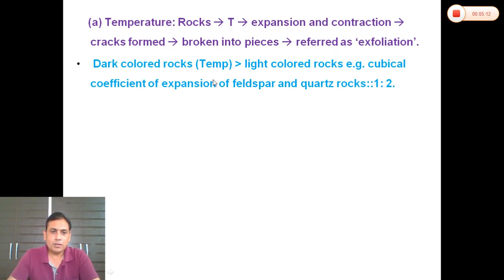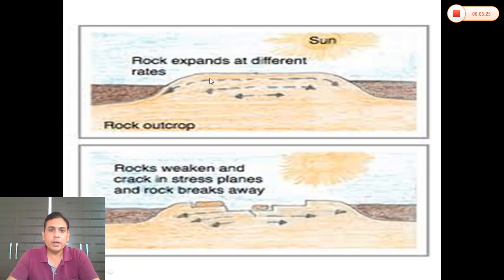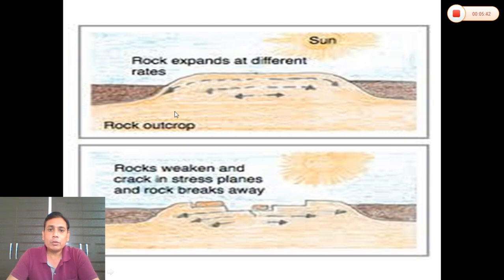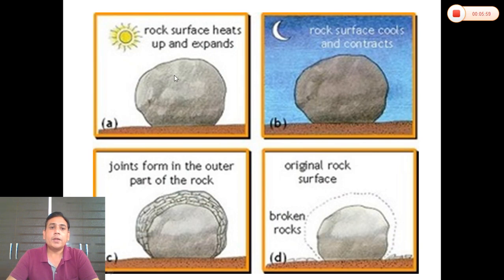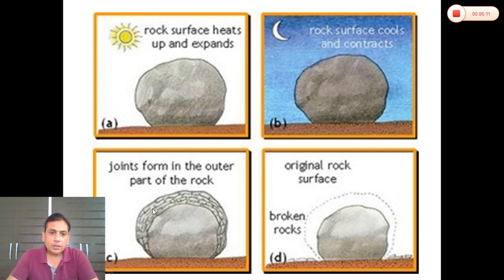Dark-colored rocks absorb more heat and are therefore more sensitive to breaking down than light-colored rocks. When the rock surface heats up and expands, then cools and contracts, this expansion and contraction occurring over many years causes the rocks to eventually break apart.